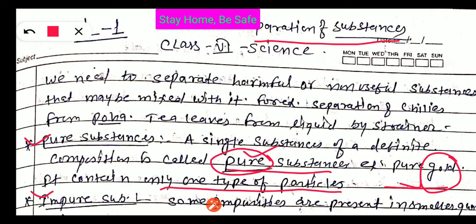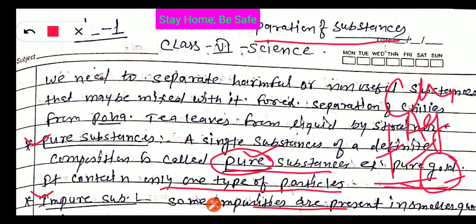But sometimes we have impure substances also. Impure substances means some types of impurities are present in a smaller quantity. For example, if gold has some quantities of silver and copper mixed in it, then it is not pure — it becomes impure substances, with copper and silver as impurities.